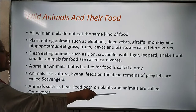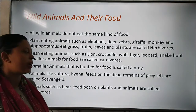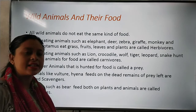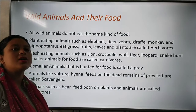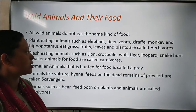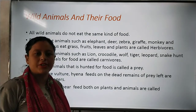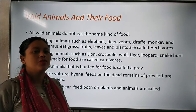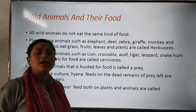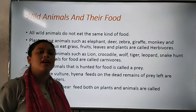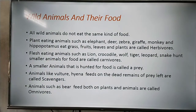Animals such as bear, which feed both on plants and animals, are called omnivores. The animals who eat both plants and other animals are called omnivores. This much for today. In the next class, we will be doing herbivores, omnivores and carnivores in more detail. Thank you, class.